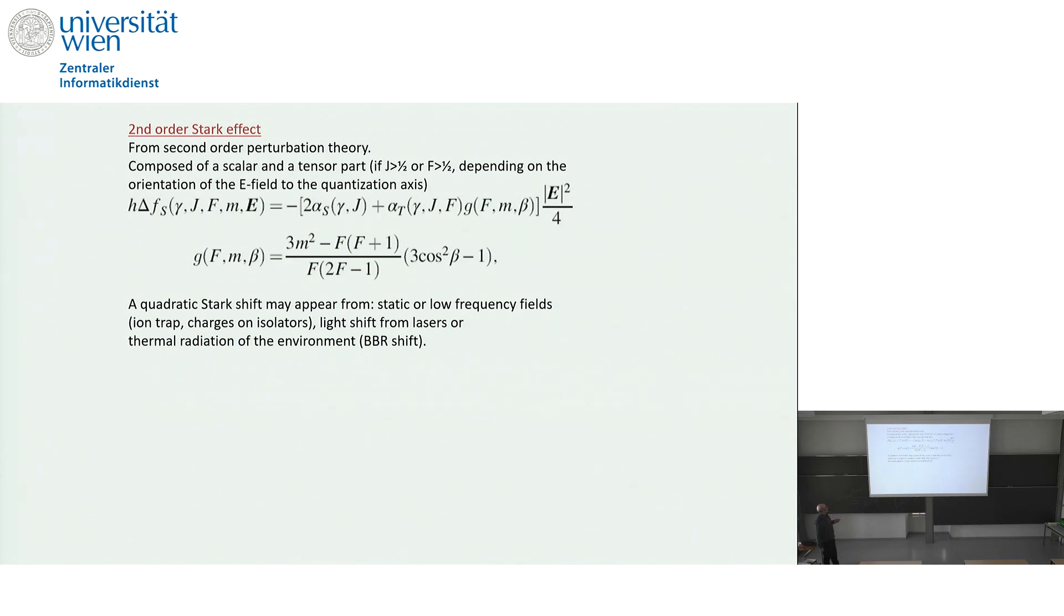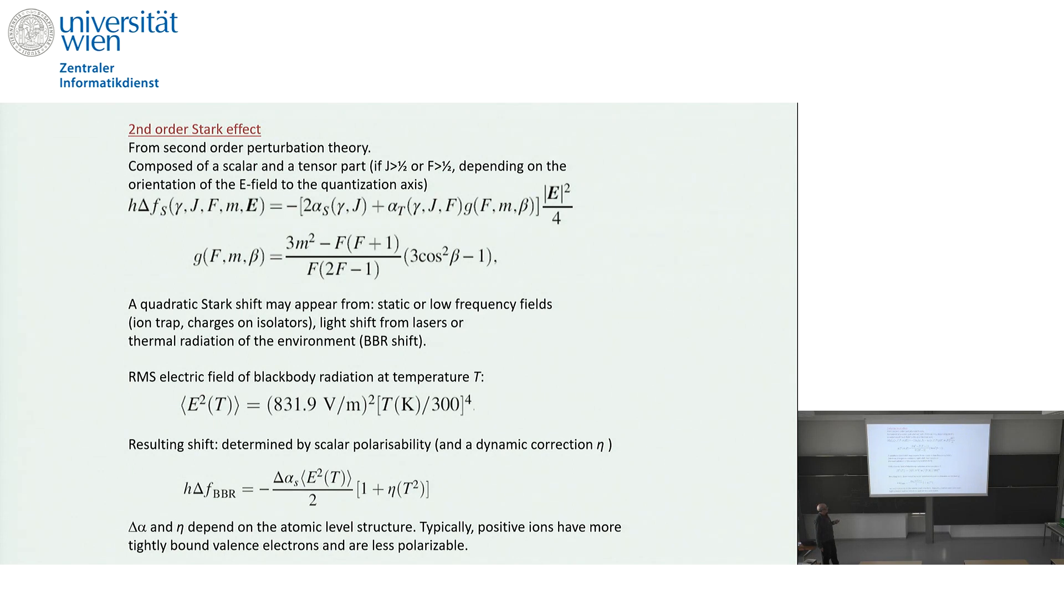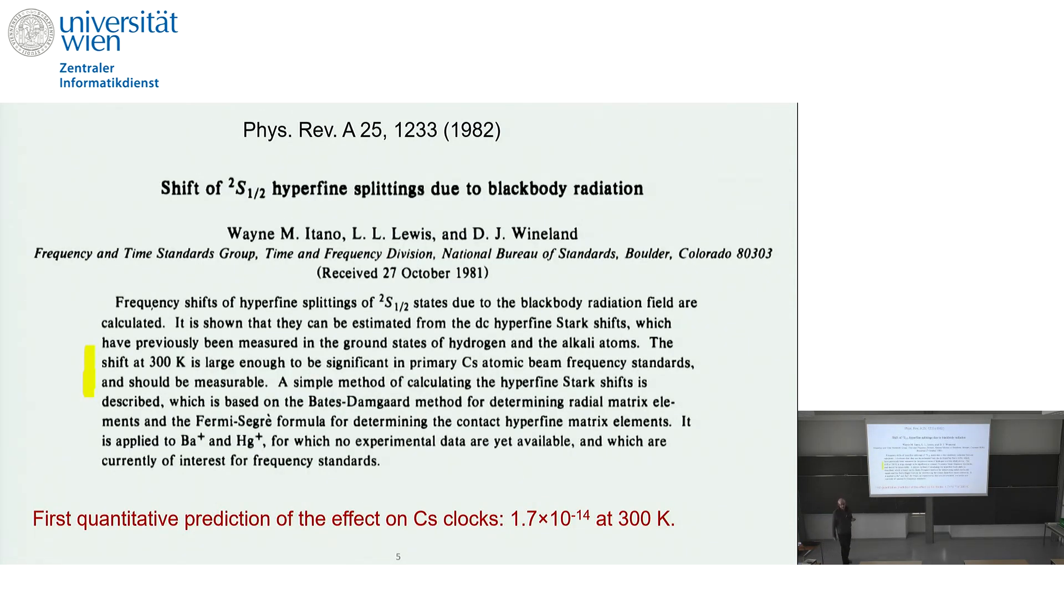It can be described by a scalar polarizability. Then there is geometrical factors and factors depending on the quantum numbers. And we have the quadratic RMS field strength of the blackbody radiation field scaling predominantly with T to the 4. And then one asks what is the effect on the level shift of the clock. So for the cesium clock the question was asked for the first time in 1982 in this paper here by Itano, Lewis and Wineland at the US NBS, NIST today.